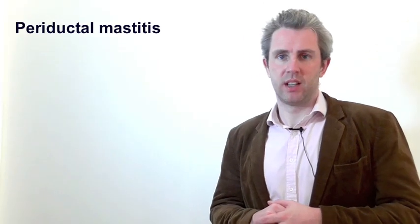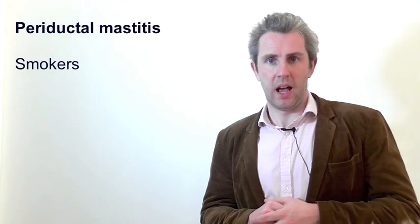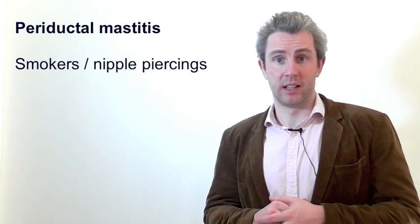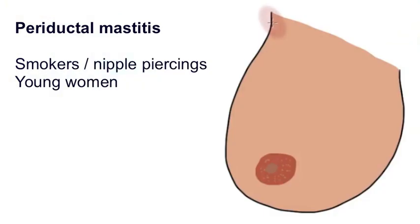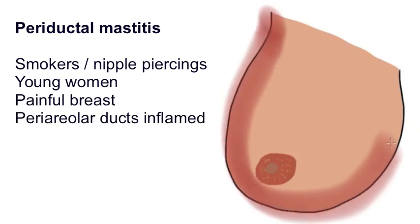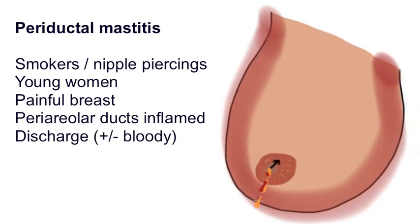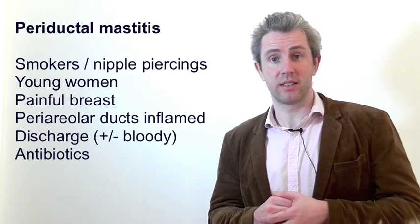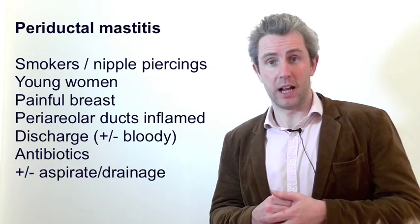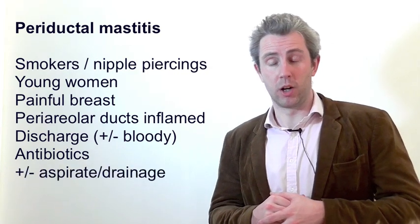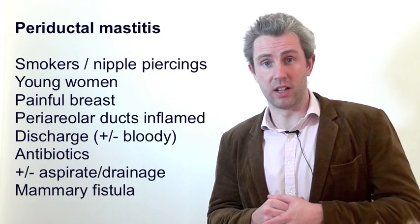Periductal mastitis is common in smokers and in those with a nipple piercing, and it tends to occur in younger women. It presents with a painful breast and the ducts around the nipple are inflamed. The breast can be warm and tender on examination and the nipple inverted. There may also be bloody or non-bloody discharge. Treatment is antibiotics. If an abscess develops under the breast skin, it can be surgically aspirated or drained. A common complication is mammary fistula.